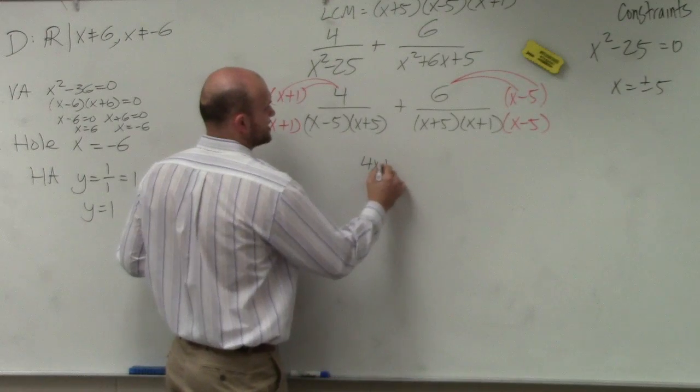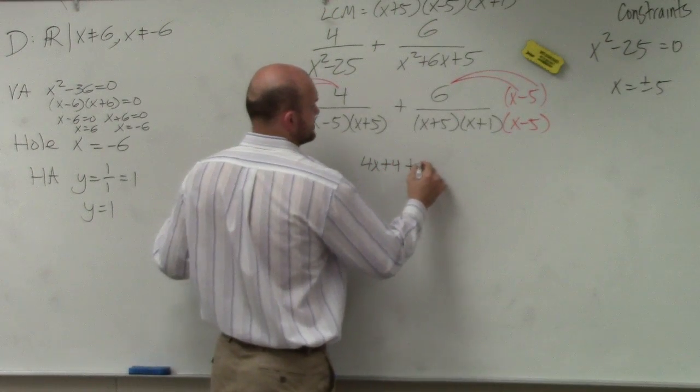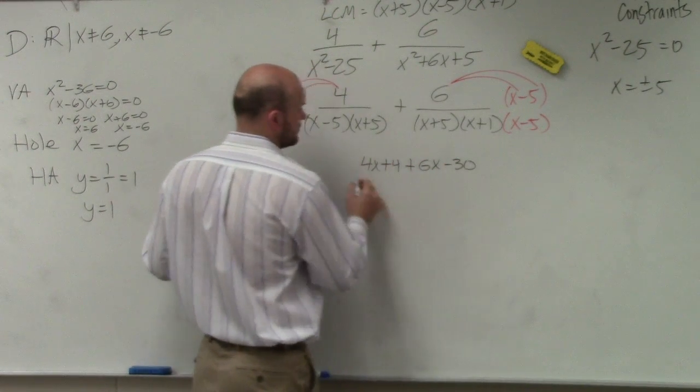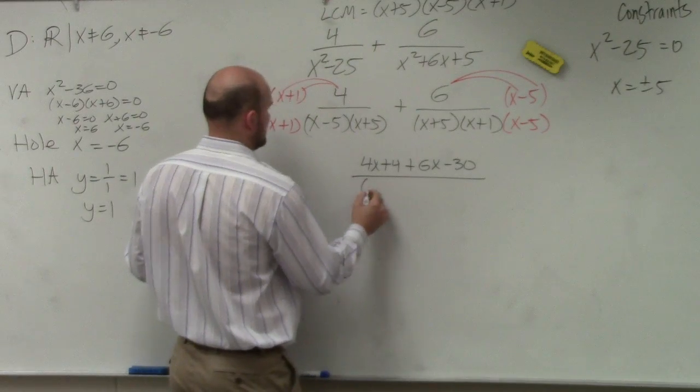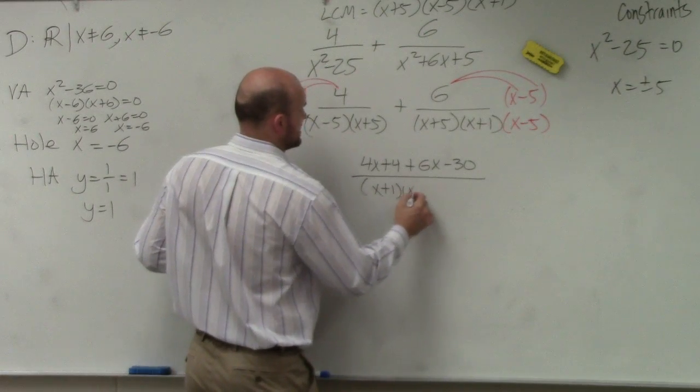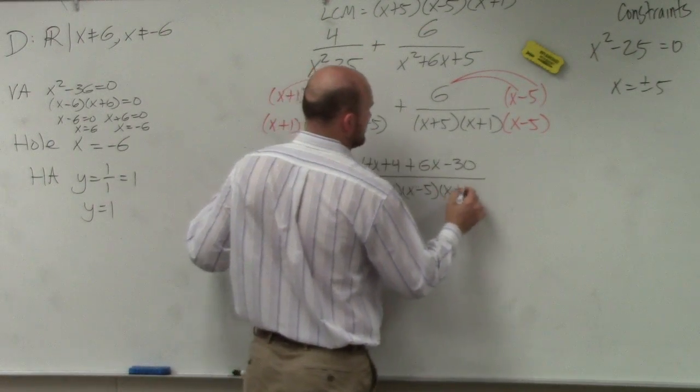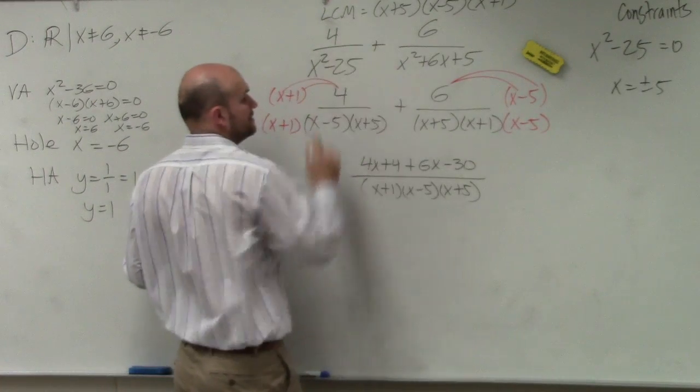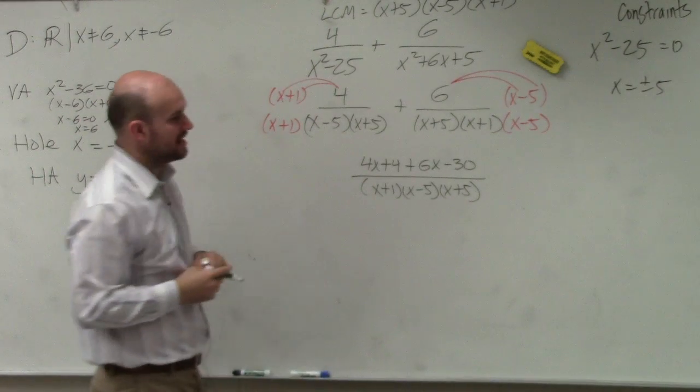So on the numerator, I'll have 4x plus 4 plus 6x minus 30. And then my denominator would be x plus 1 times x minus 5 times x plus 5, which is my least common multiple or denominator.